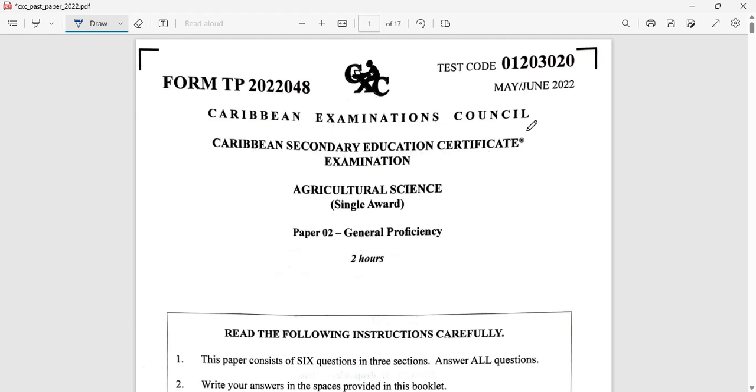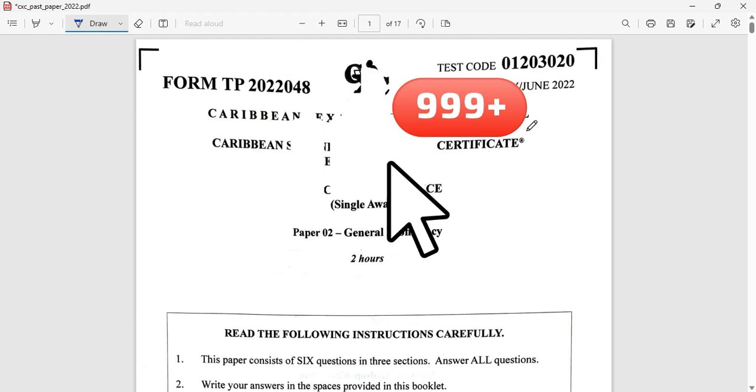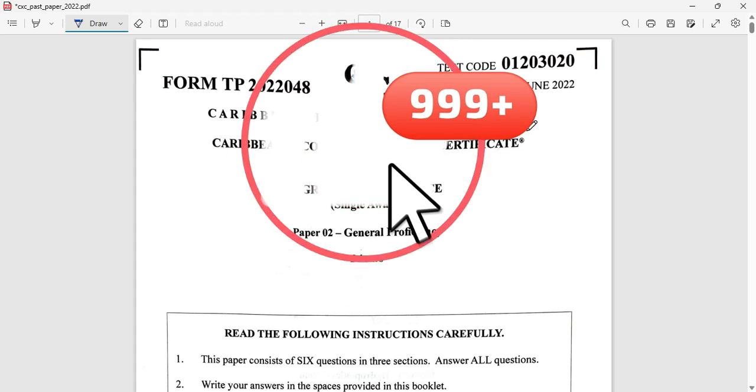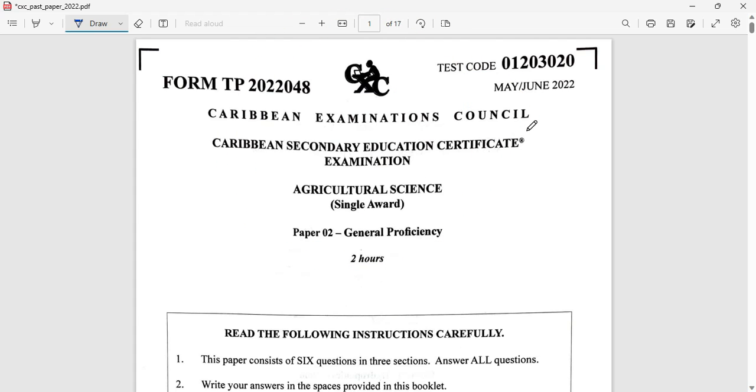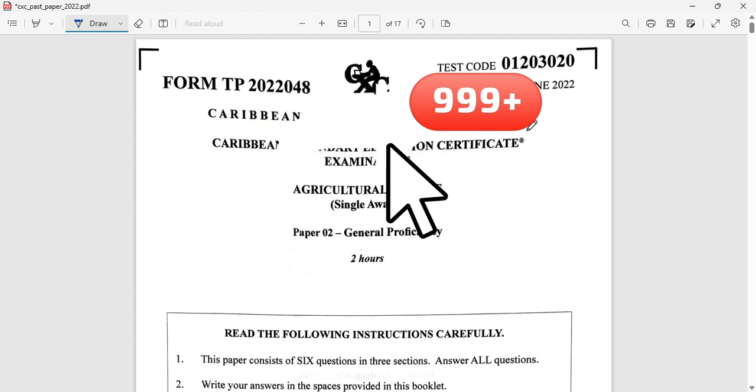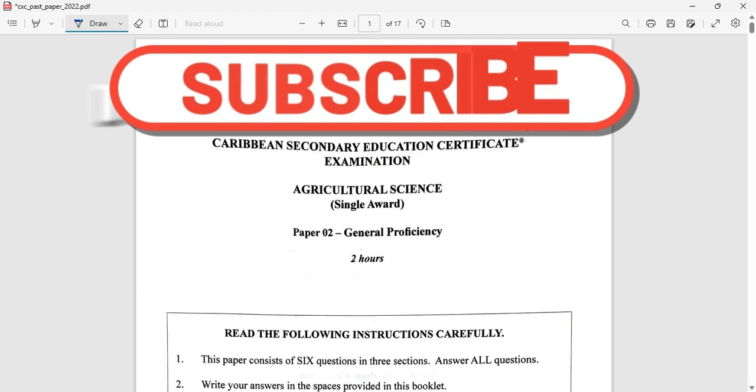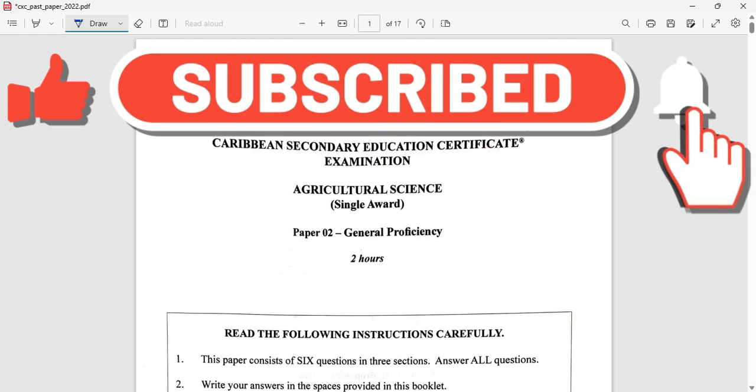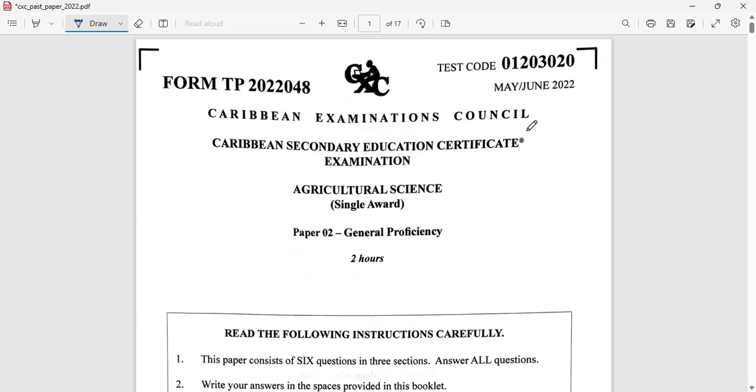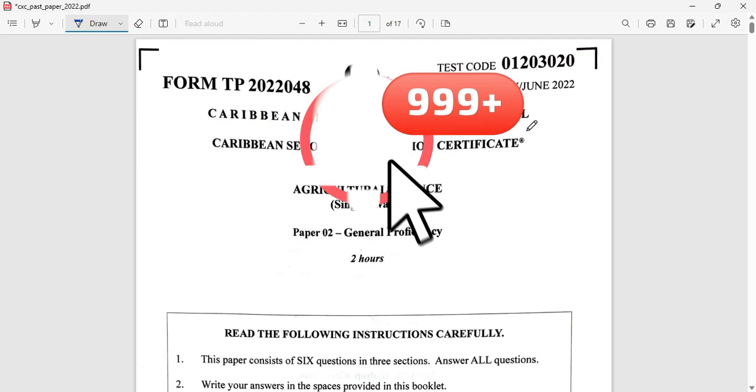Welcome to CXC Biology TCP. I am Mr. Wilson from the TCP Academy. Today we're looking at the May/June 2022 Agricultural Science single award paper. We're going to be looking at question number two, covering diminishing returns, marginal product, and other topics related to agricultural business.